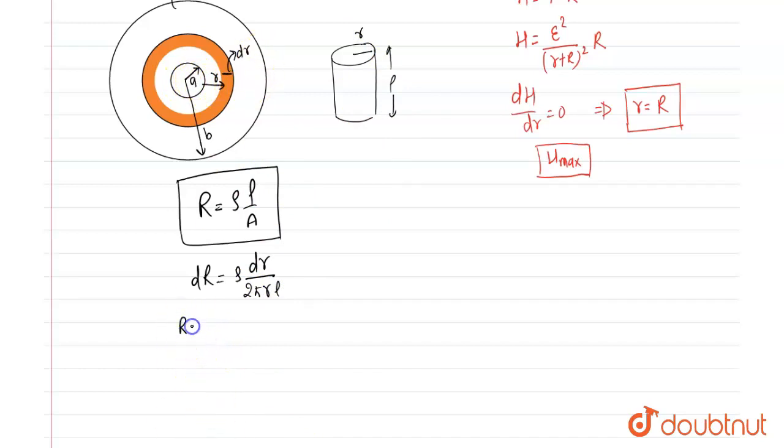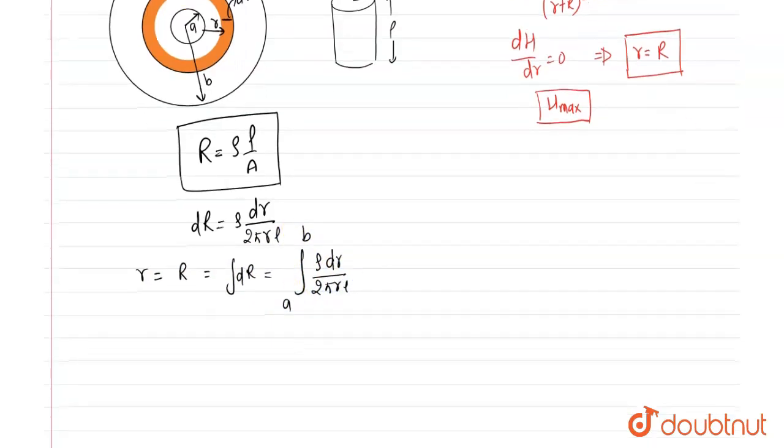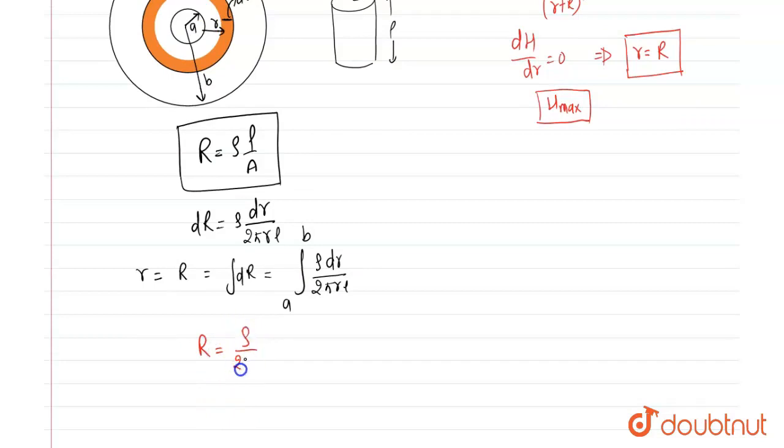So we will integrate. So total resistance small r is equal to capital R is equal to integration of dR. So integration of rho dR upon 2 pi R L from A to B. So that is the final relation. So we have to solve that relation. R is equal to rho upon 2 pi L is constant and integration dR over R limit A to R limit B.